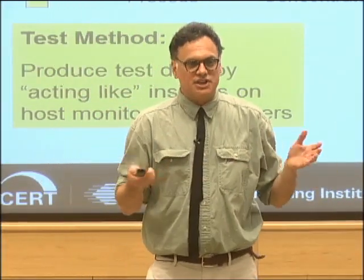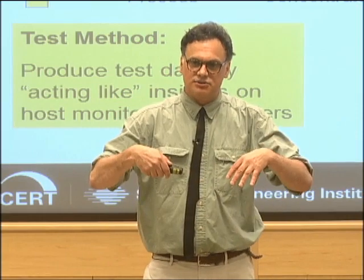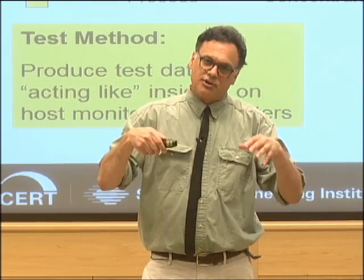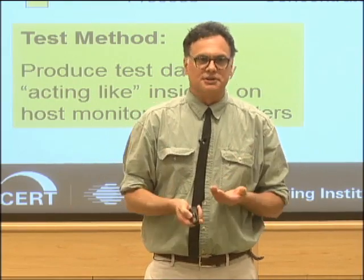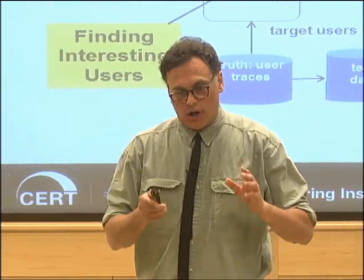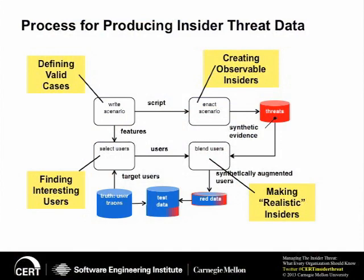From the engineering point of view, all the additional constraints on how the data is used are actually welcome additions because they ground the problem and allow us to ask measurable questions about what's real and how to produce measurable realism. This is a top-level description of the process we use for producing synthetic data. I'm going to step through the various boxes and highlight what we mean by realistic data when framed against those highlighted yellow boxes.